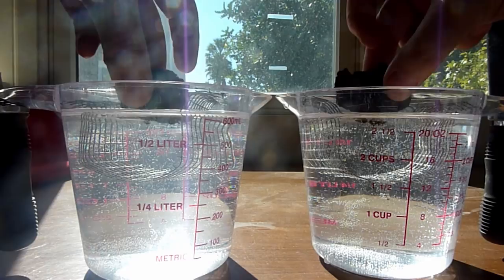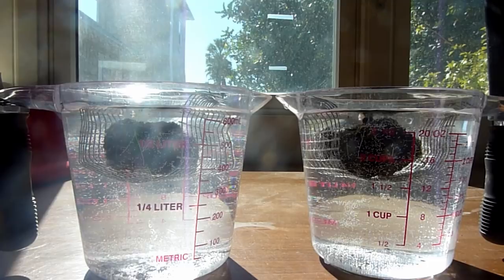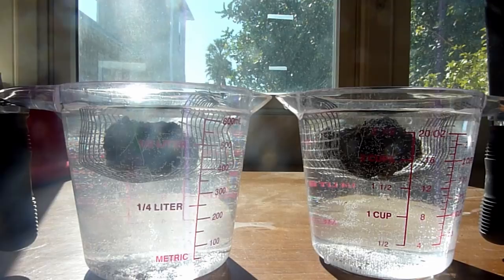One way of assessing soil health is to examine aggregate stability, or how well a small chunk of soil maintains cohesion when immersed in water. There are two important questions in this context.